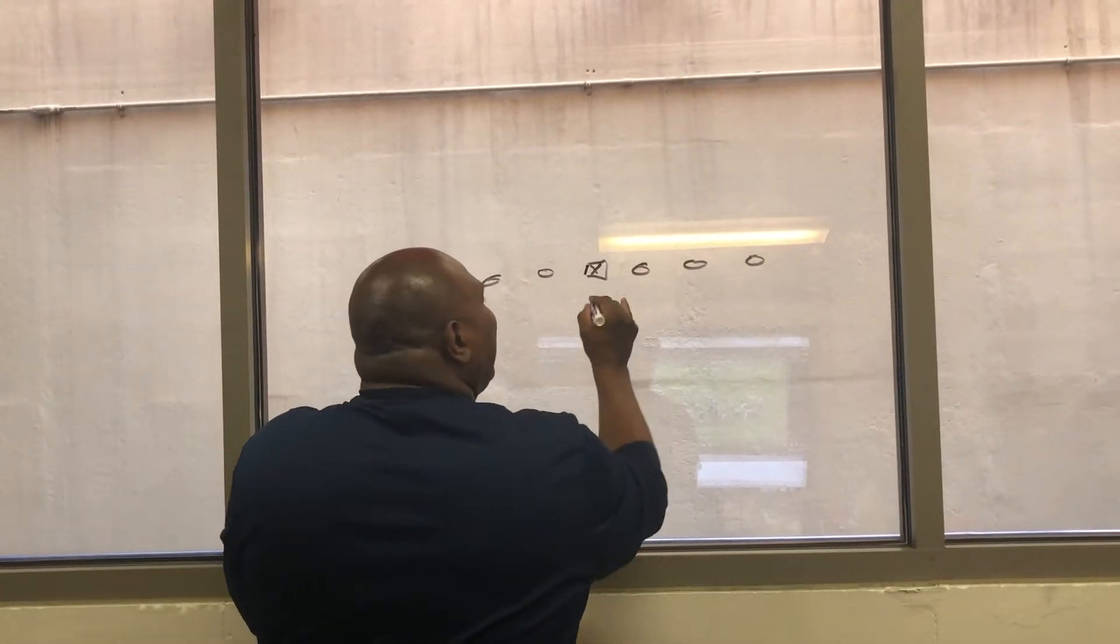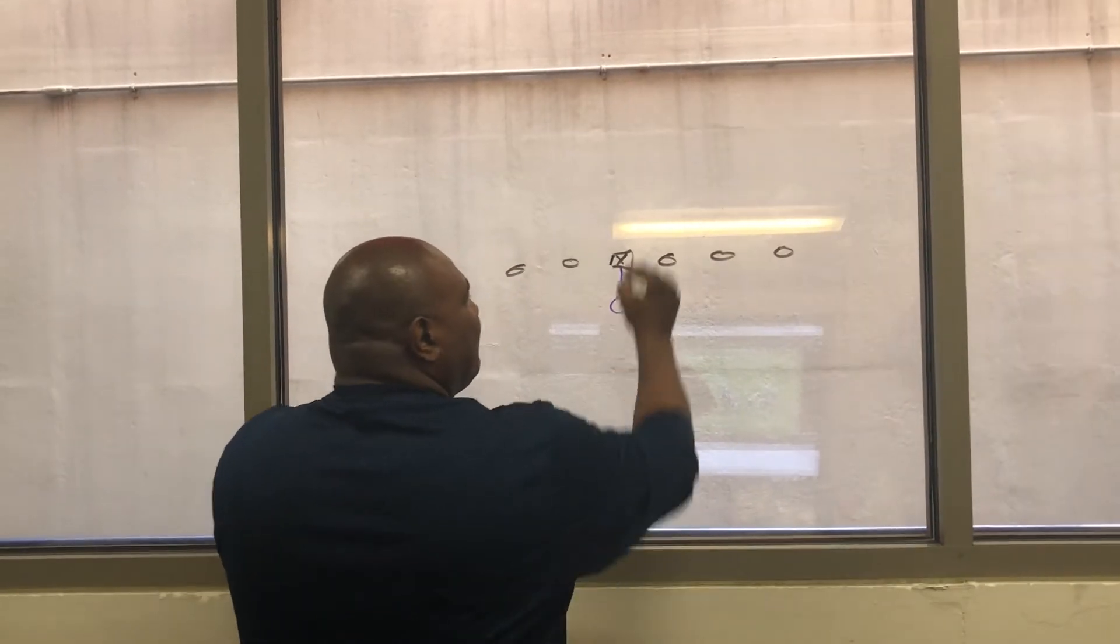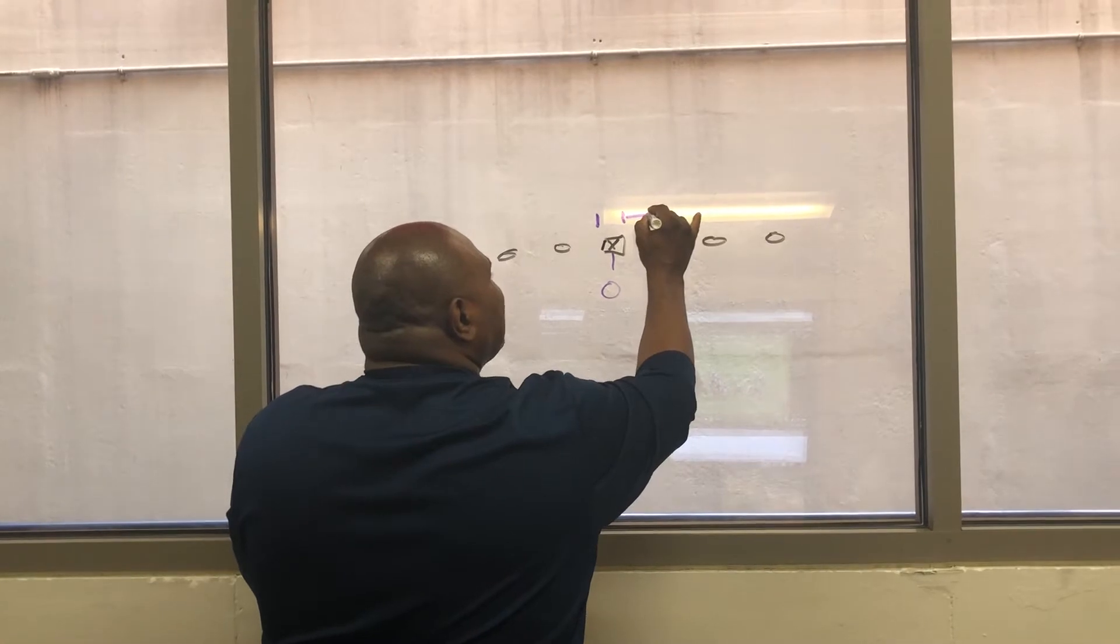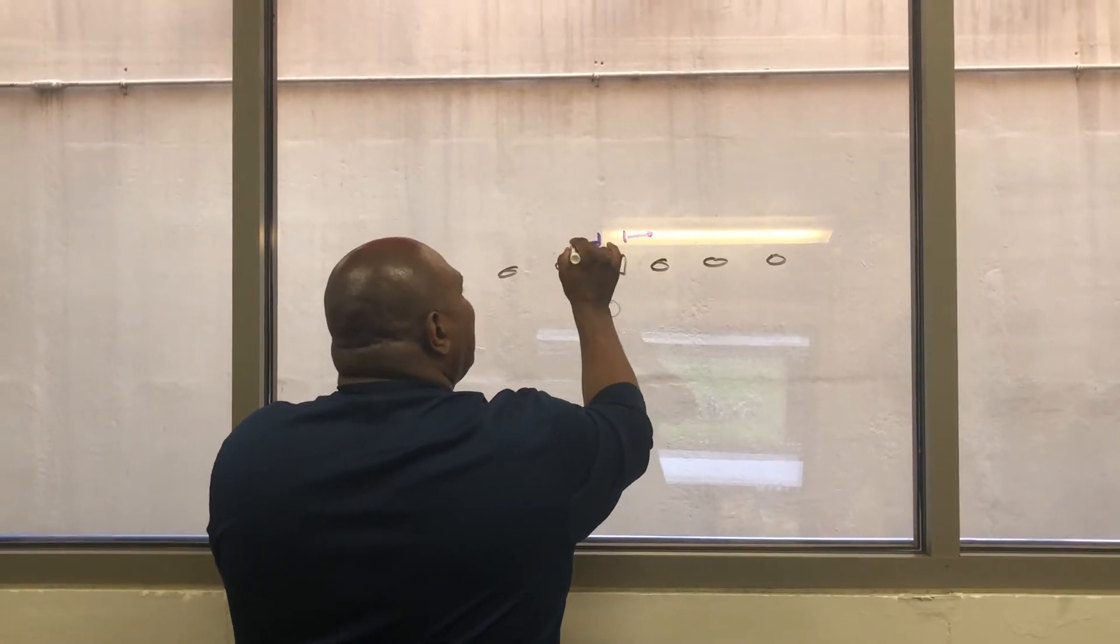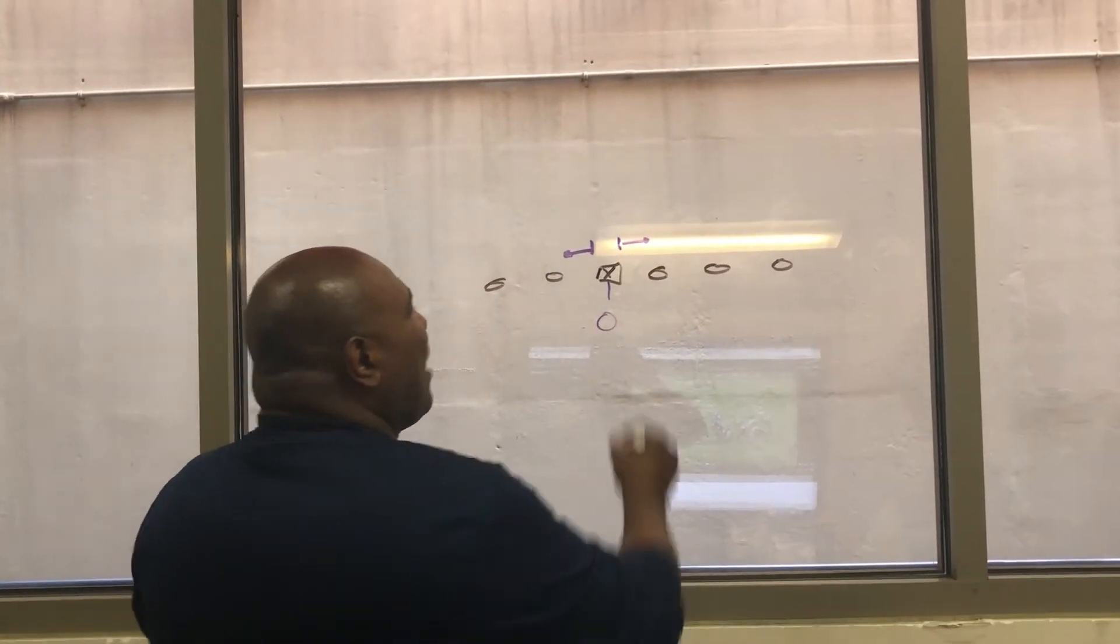Number one, head up on this guy is a zero technique. On the outside shade of that center is a one technique that exists all the way through the gap. You have to make sure that you know that it covers the whole entire gap.